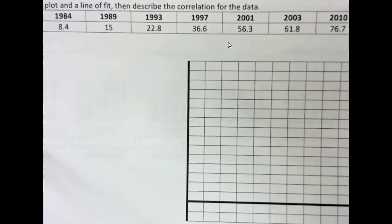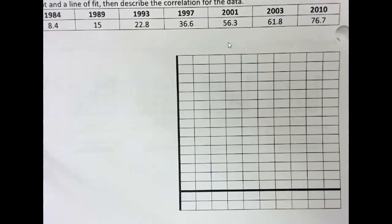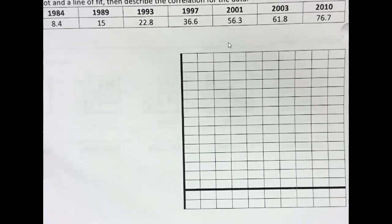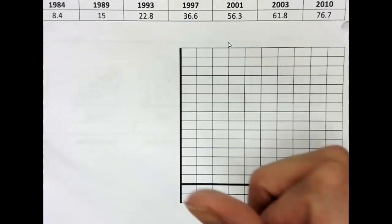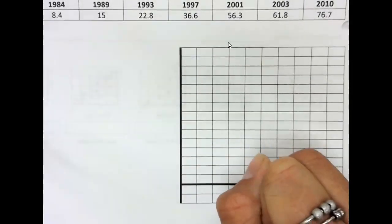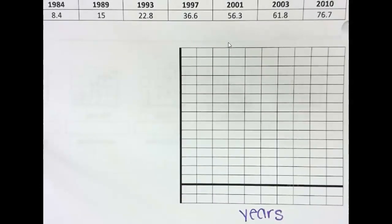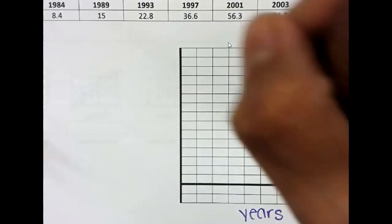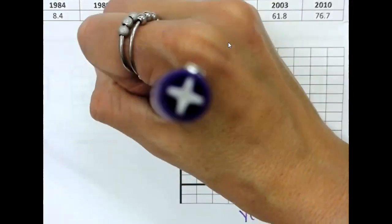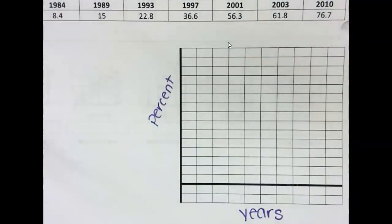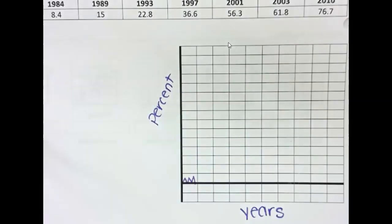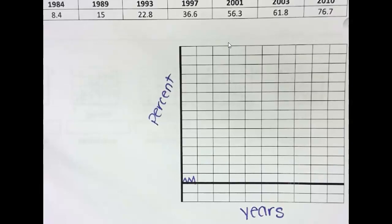So, when drawing a graph, you need to make sure that you label all parts. So, we need to make sure we label the y and the x-axis. So, the x-axis is years. The y-axis is percent. If you don't start at zero, you put a squiggle. That indicates that you're not starting at the origin.